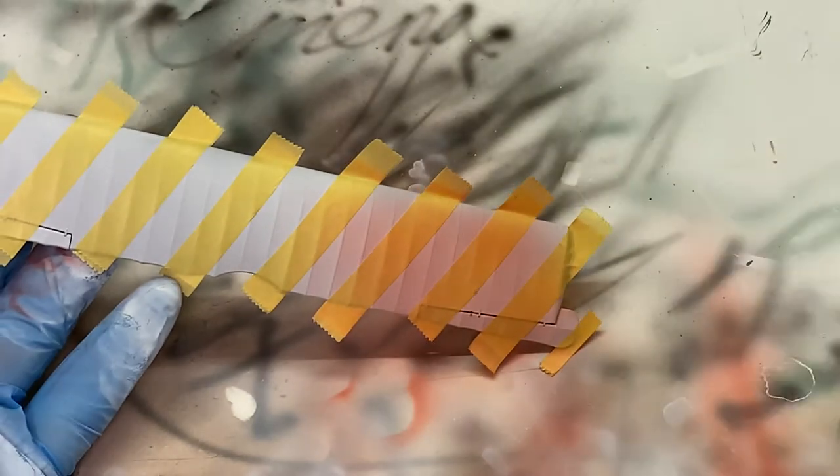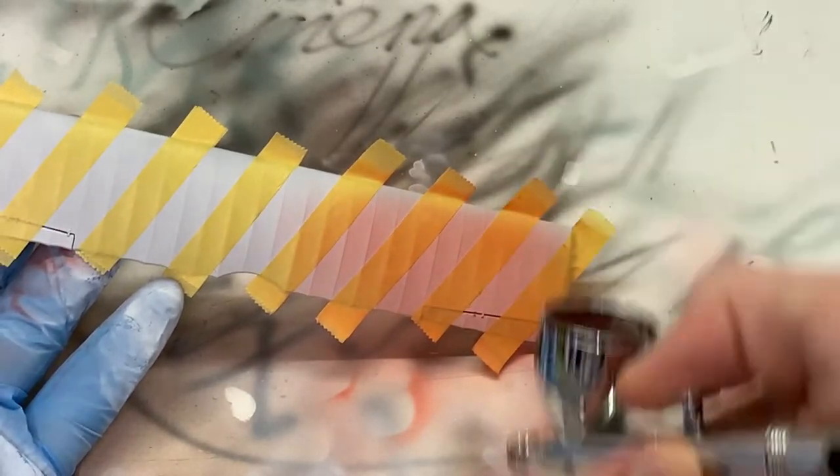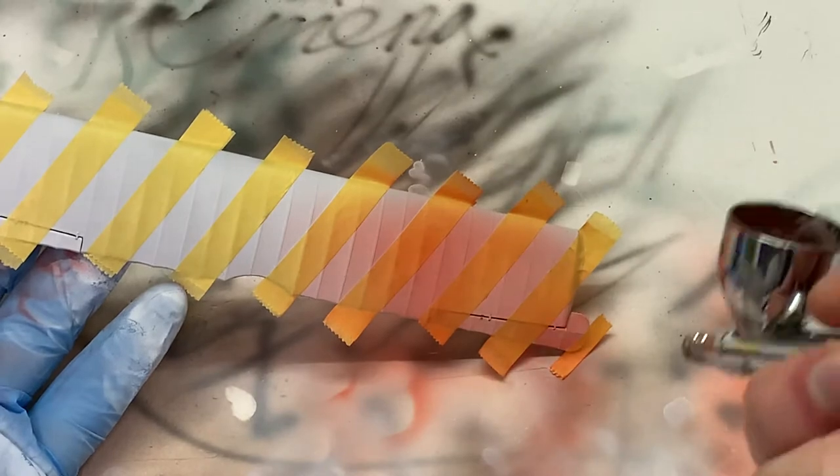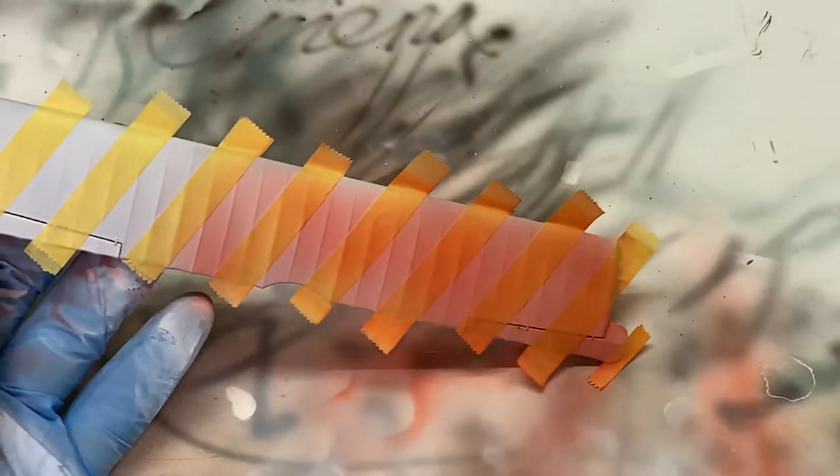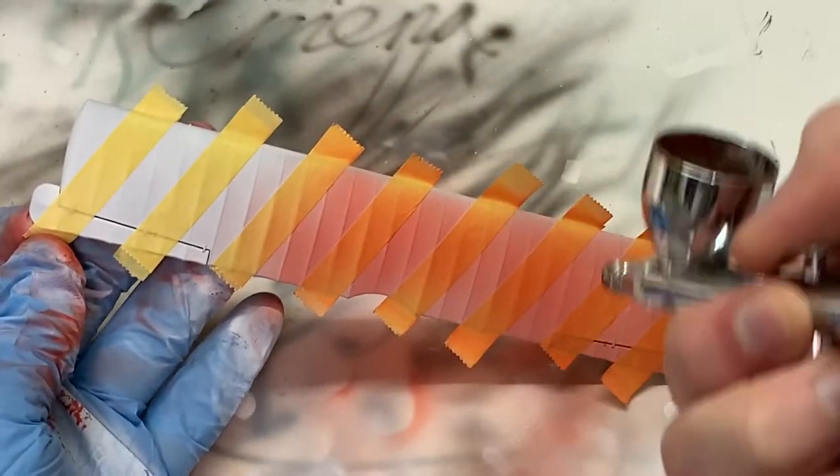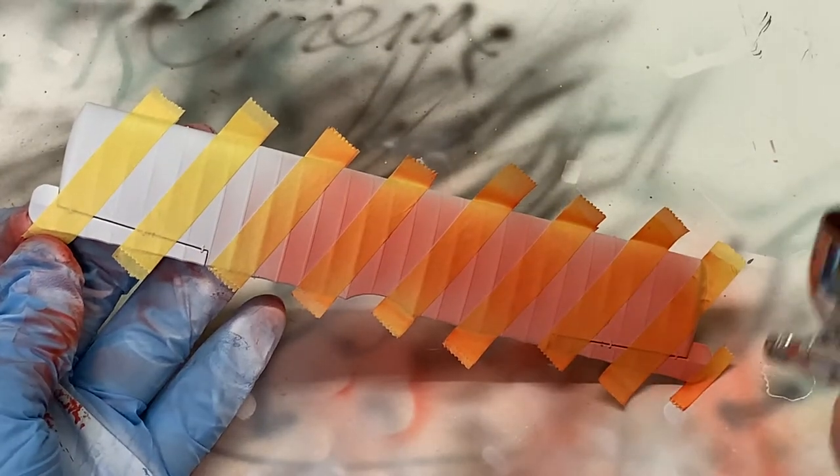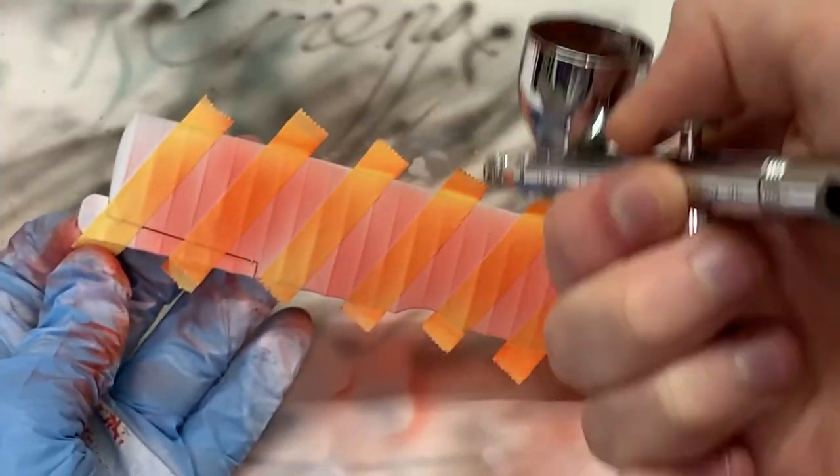It's always better to spray multiple thin coats than to go over the whole thing once with a thick coat. That way you'll get a much smoother result in the end and you also won't risk flooding any fine details on the surface, as if there are any fine details on the surface of this model.